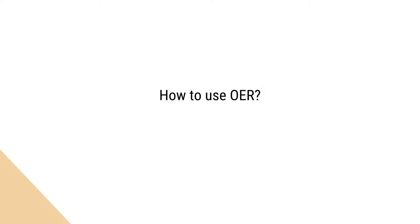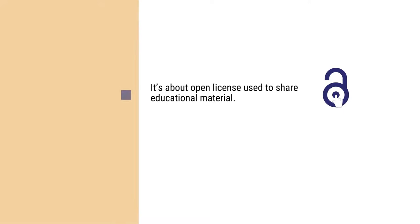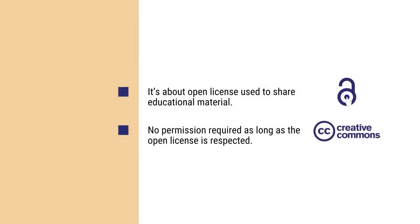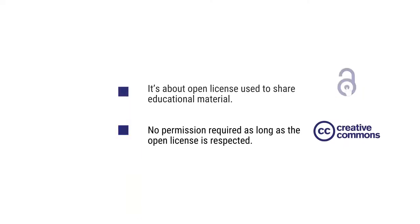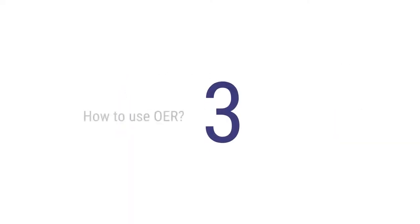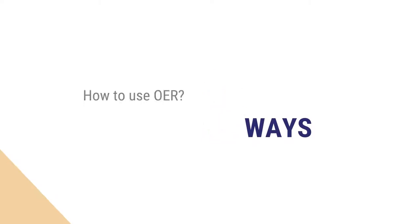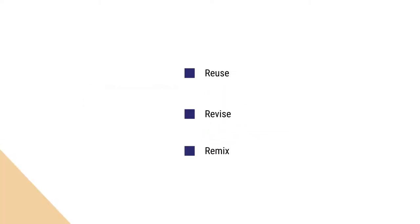How to use OER? Using OER is very much dependent on the learner's understanding of the open licensing system, which is often used to share educational materials. As long as the open licensing terms are respected, one does not need to seek permission from the author to access, use or at times repurpose the content. There are basically three ways to use OER: reuse, revise and remix.